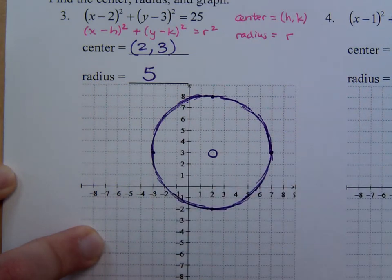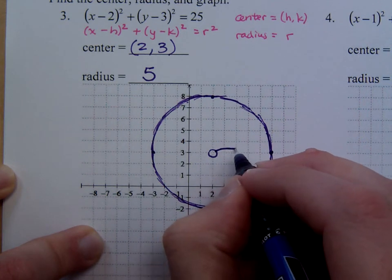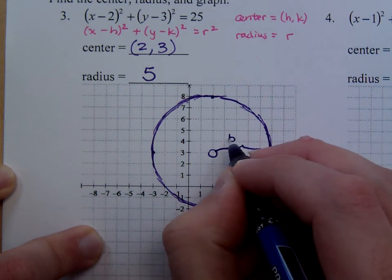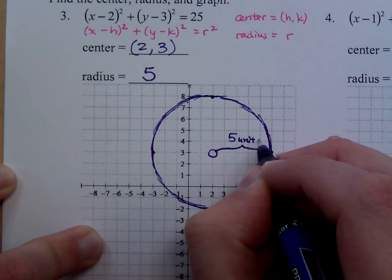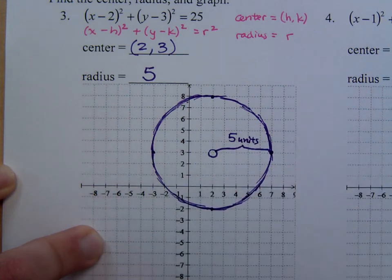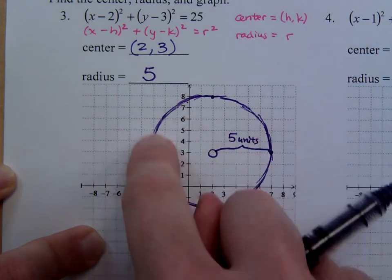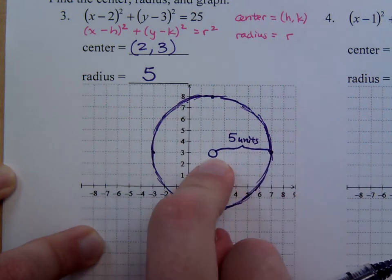So this is your center, and you've got the radius of 5. So from here to here is 5 units all the way around. So the circle is the graph that we have on the outside. The center is basically just a reference point.